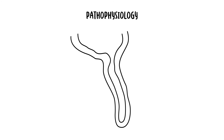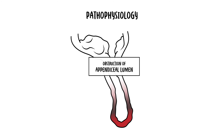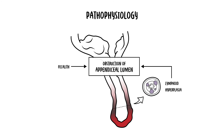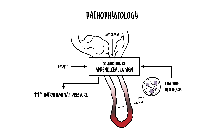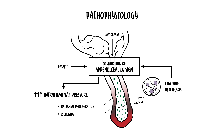Appendicitis occurs due to obstruction of the appendiceal lumen. This can be caused by a fecalith, lymphoid hyperplasia — where the lymph glands enlarge and obstruct the lumen — or rarely a neoplasm. Obstruction leads to increased intraluminal pressure, which promotes bacterial proliferation, ischemia (lack of blood supply), and eventually transmural inflammation.